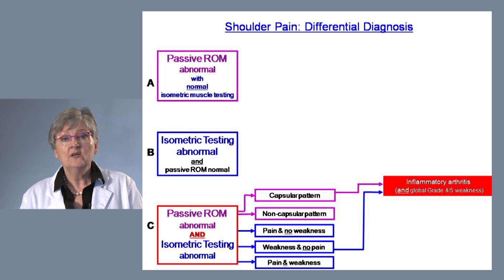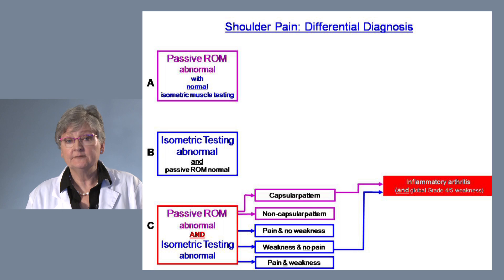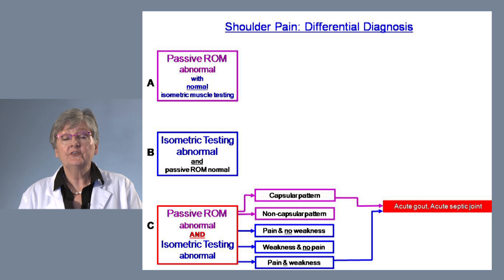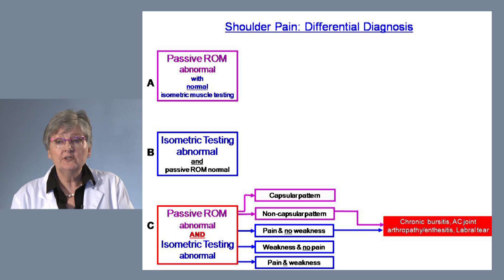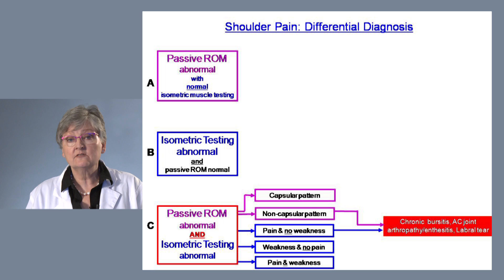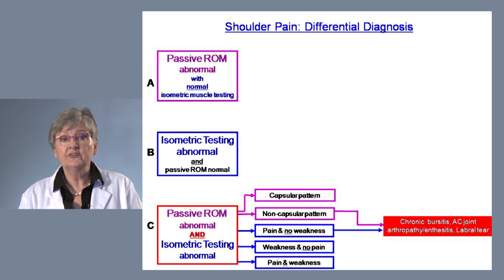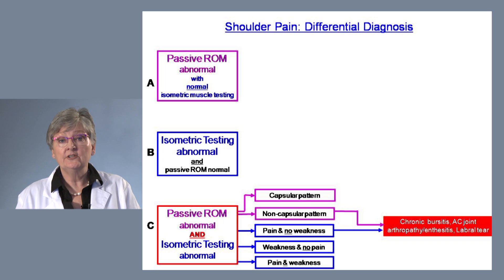A capsular pattern with weakness and no pain can occur in inflammatory arthritis syndromes — for example, global grade 4 weakness from long-standing inflammatory arthritis around the shoulder. A capsular pattern with pain and weakness suggests acute gout or acute septic joint, where any isometric testing reproduces pain. A non-capsular pattern with pain but no weakness is seen with chronic bursitis, acromioclavicular joint arthropathy or enthesitis, and labral tears.